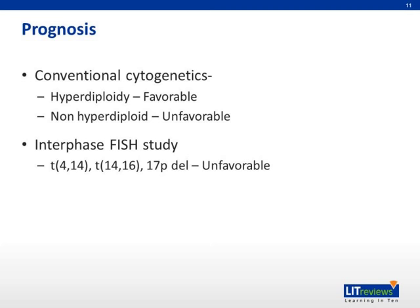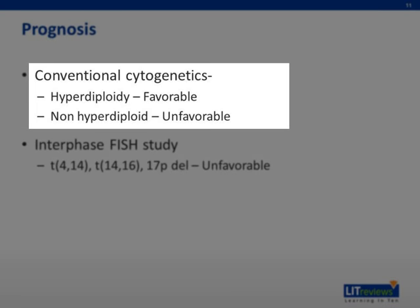Prognosis is based on conventional cytogenetics and interphase FISH study. By conventional cytogenetics, myeloma falls into two broad categories: the hyperdiploid type, which has a favorable prognosis and includes patients with numerous trisomies and low prevalence of IGH translocation; and the non-hyperdiploid type, which has unfavorable prognosis and encompasses hypodiploid, pseudo-diploid, and near-tetraploid myelomas. This group is also highly enriched for IGH translocations, which are adverse in myeloma.